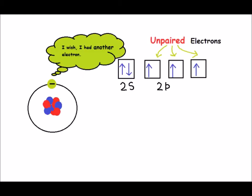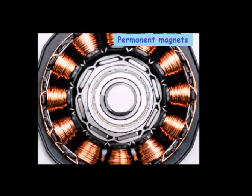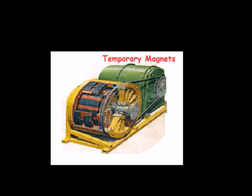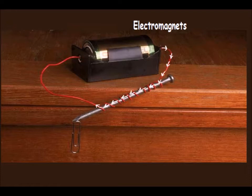Some magnets are called permanent magnets. They keep their magnetism for a long time. Temporary magnets keep their magnetism for a short time. Electromagnets are temporary magnets. They produce a magnetic field when an electric current flows through them.